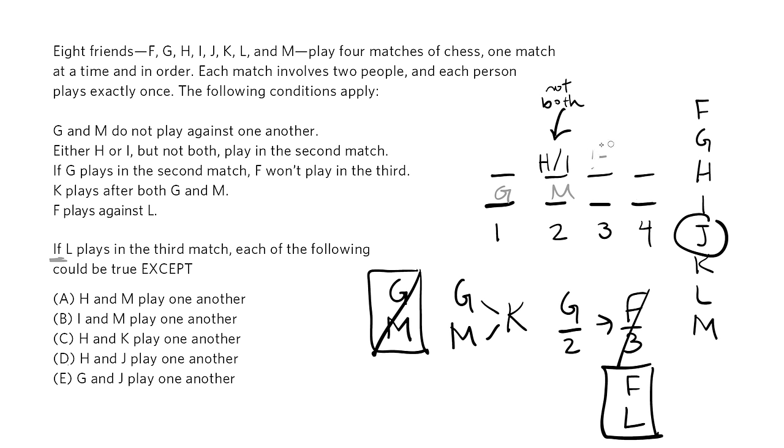Let's go through that one more time. If L plays in the third match, F does as well. We must place G, M, and K, and G and M must go before K. G can't go in 2 because F is in 3, so G must go in 1, M must go in 2, and K must go in 4. Now, let's look at the answers.